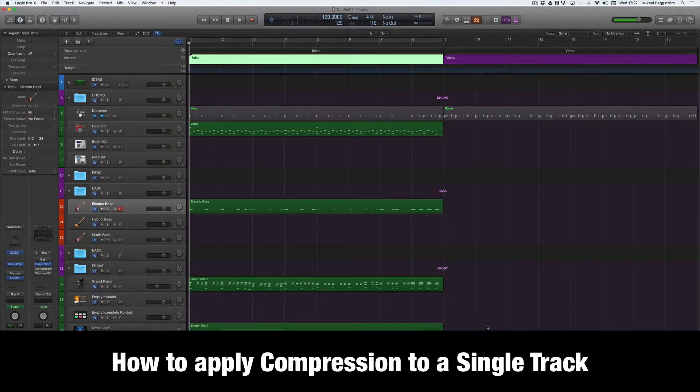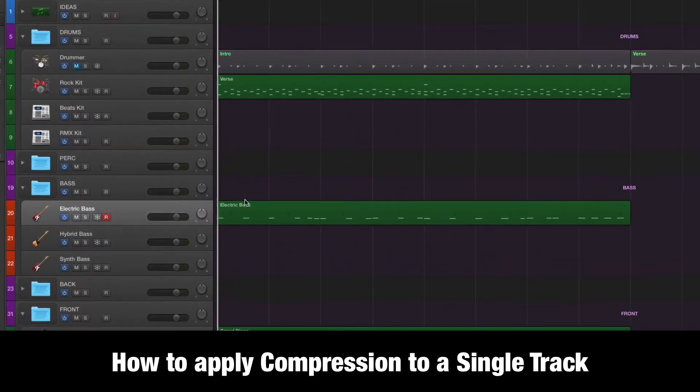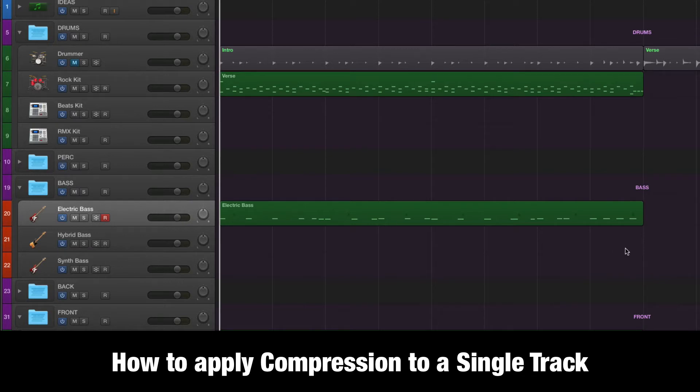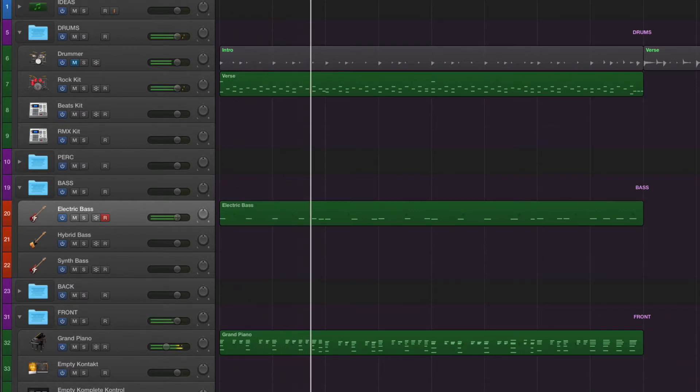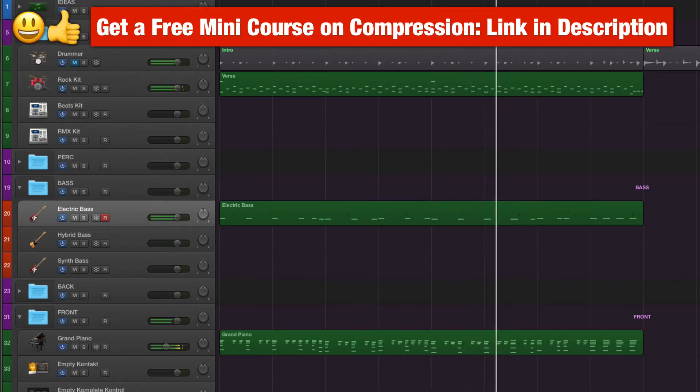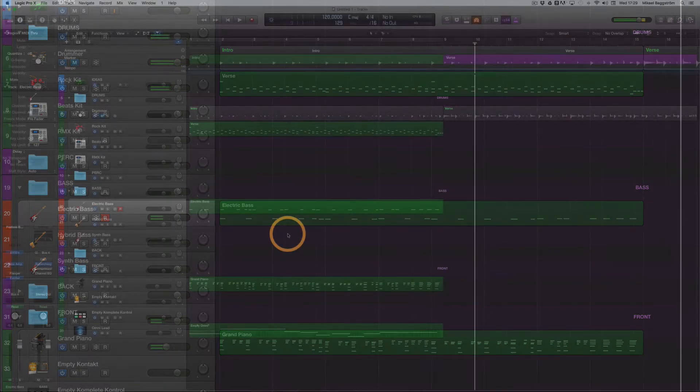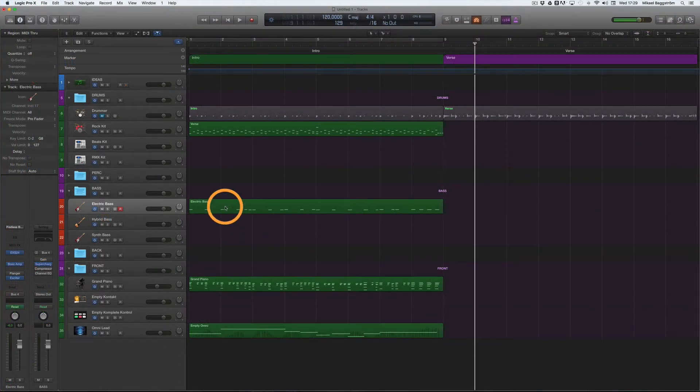In this example, I will show you how to apply compression to a single track in your music production. Specifically, I am going to apply a compressor to this electric bass track here. But first, let's listen to the 8-bar beat I have made. Okay, so now let's add a compressor on this electric bass track. The process is different depending on the music production software you use, but basically you are going to look for an insert effect.